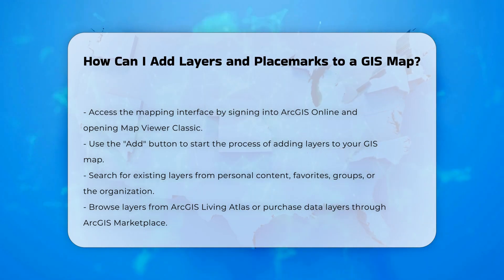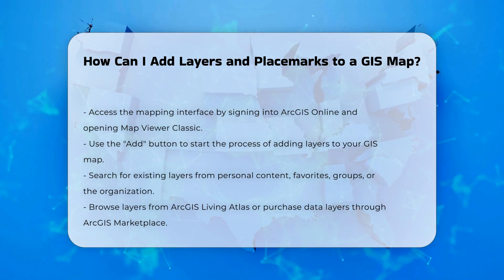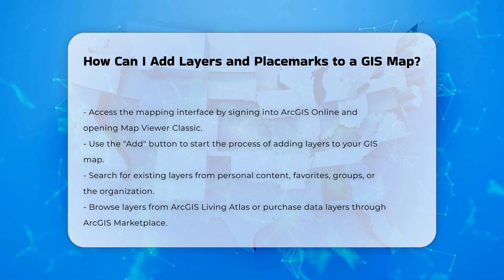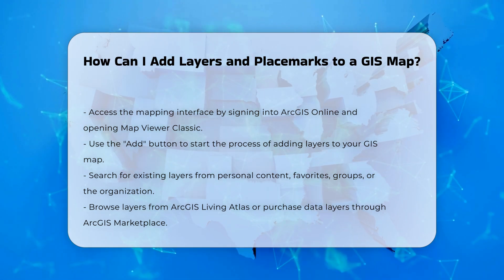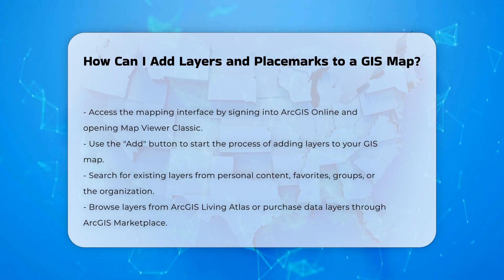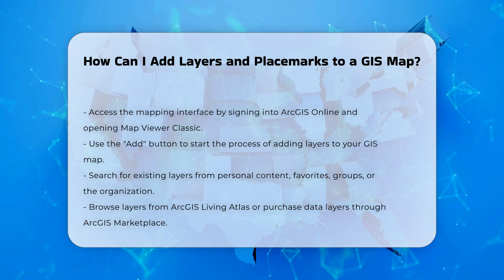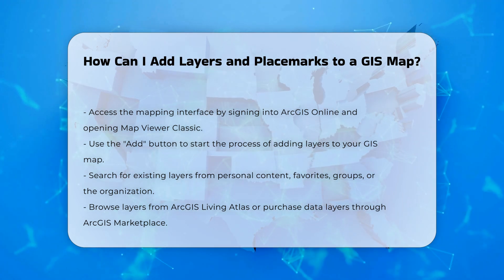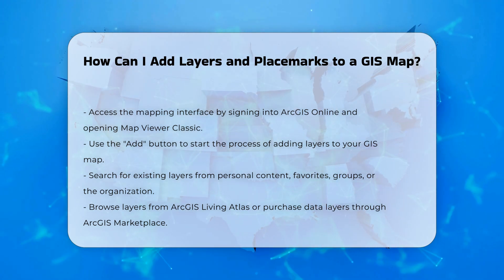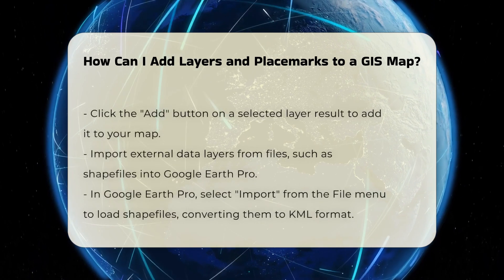Searching and Adding Layers: You can search for existing layers from various sources, such as your content, favorites, groups you belong to, or the organization you are part of. You can also browse layers from the ArcGIS Living Atlas or purchase data layers through the ArcGIS Marketplace. To add a layer, simply click the Add button on the layer result after selecting it.